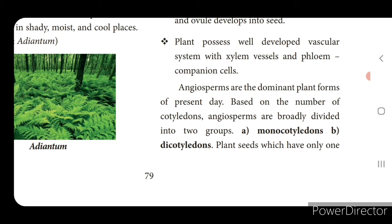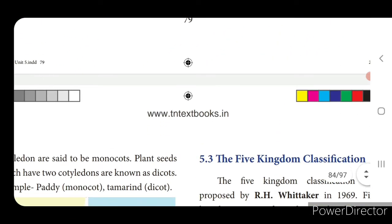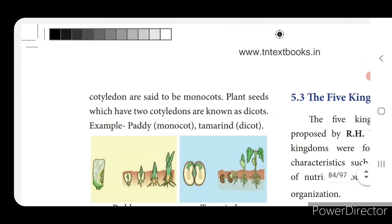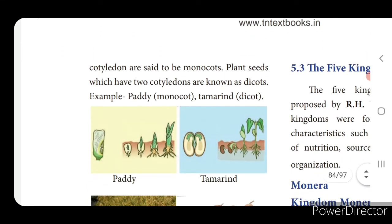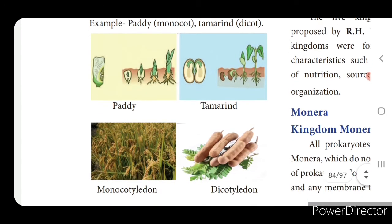Angiosperms are the dominant plant forms of the present day. Based on the number of cotyledons, angiosperms are broadly classified into two groups: monocotyledons and dicotyledons. Plant seeds which have only one cotyledon are said to be monocots. If you take rice, you cannot divide it into two equal halves - so we call that seed monocotyledon. Plant seeds which have two cotyledons are known as dicots. Example: tamarind. You can see this picture to understand better.